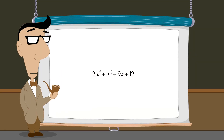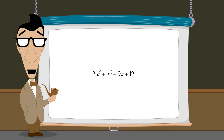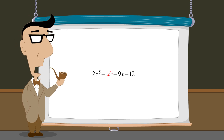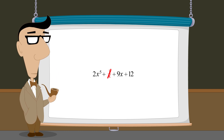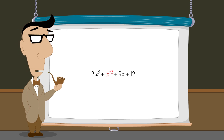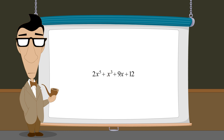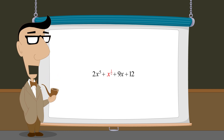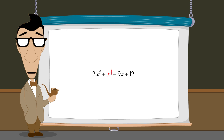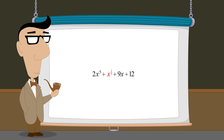Since exponents in a polynomial are non-negative, variables cannot have exponents such as negative 1, which is 1 over x, or negative 2, which is 1 over x-squared. Likewise, since exponents must be integers, fractional exponents are not allowed, such as x to the one-half power, which is the square root of x, or x to the one-third power, which is the cube root of x.